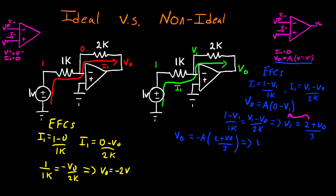And we get VO multiplied by 1 plus A over 3 is equal to negative 2 divided by 3 multiplied by A. So now dividing by 1 plus A over 3, we get VO is equal to negative 2 divided by 3 multiplied by A divided by 1 plus A divided by 3.